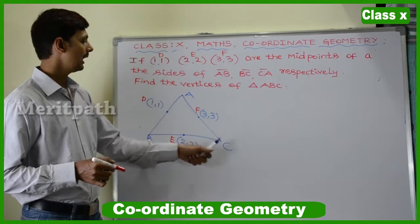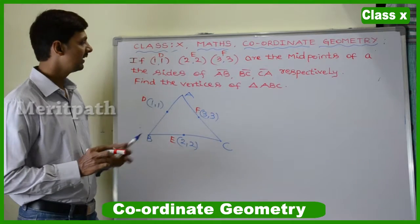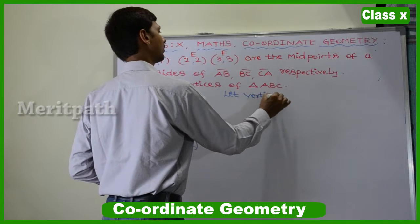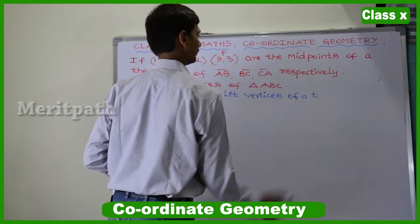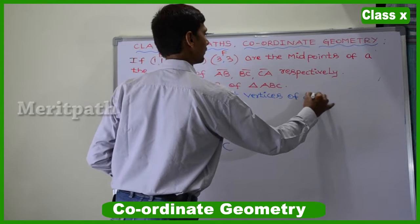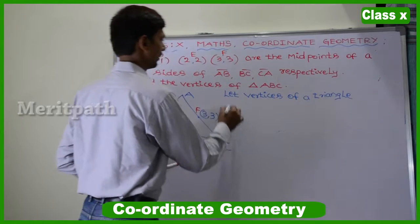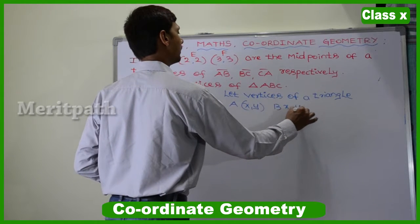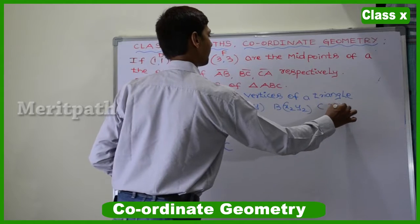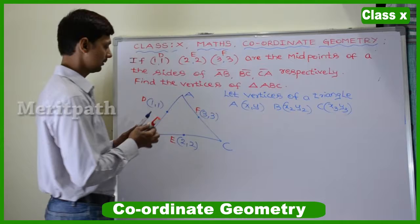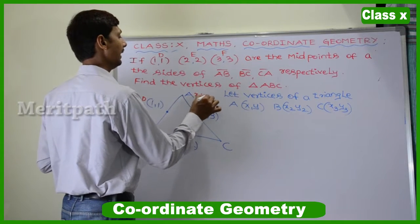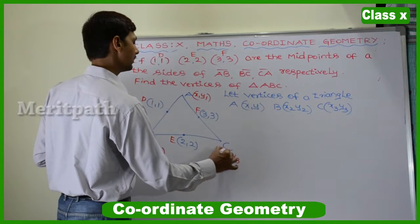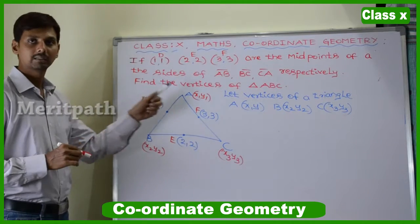We need to find out the vertices of the triangle. Let the vertices of triangle ABC be A(x1, y1), B(x2, y2), and C(x3, y3). We need to find out these vertices.